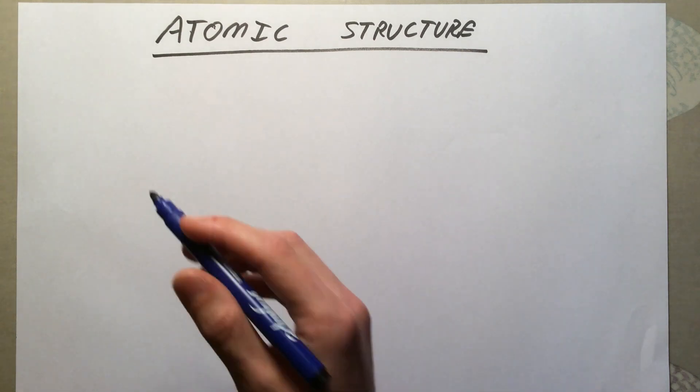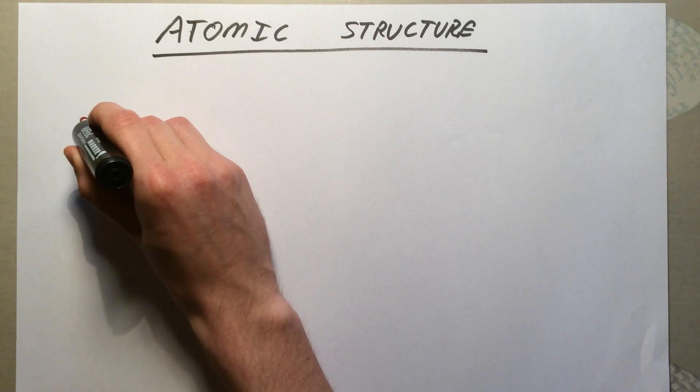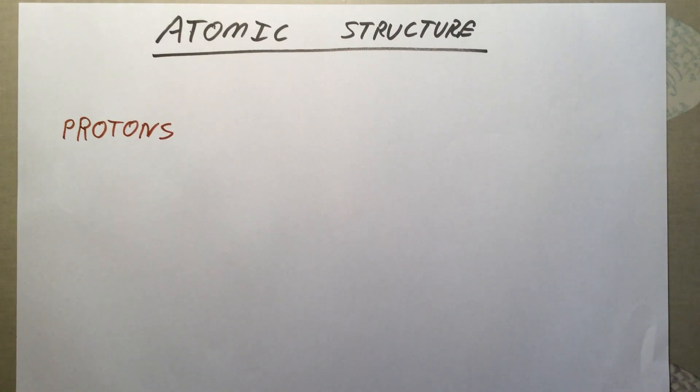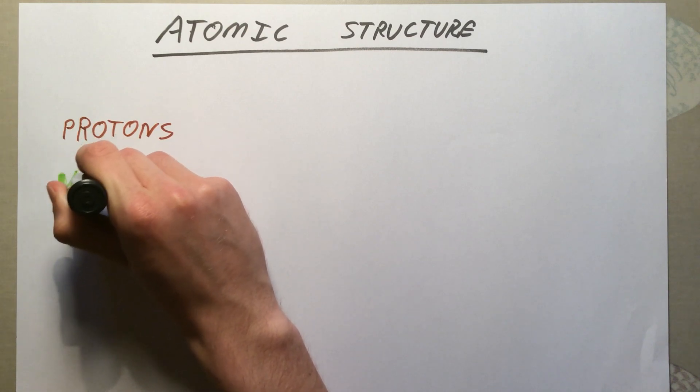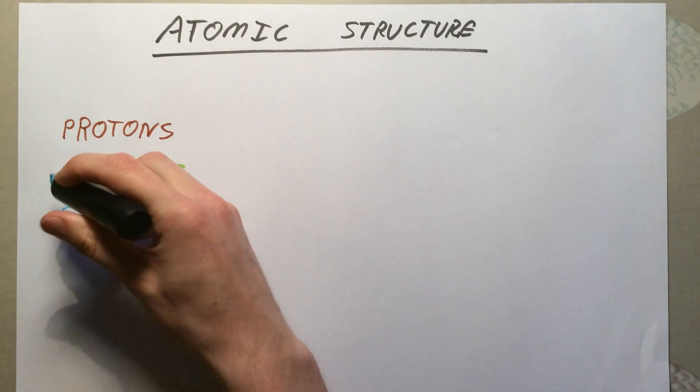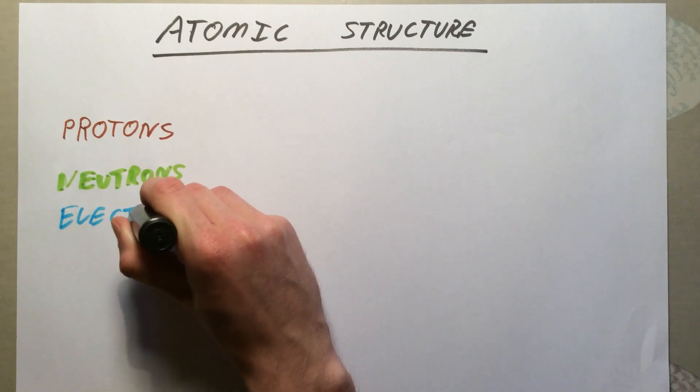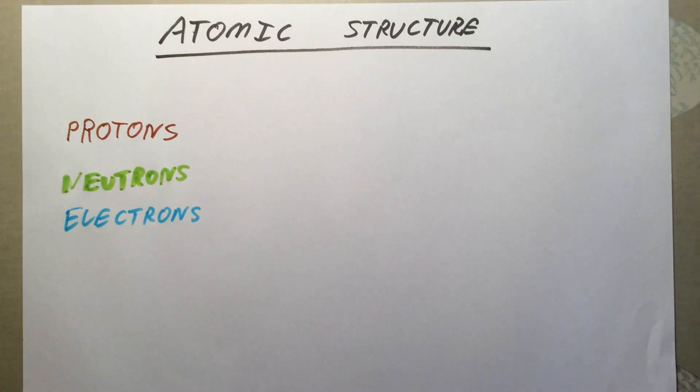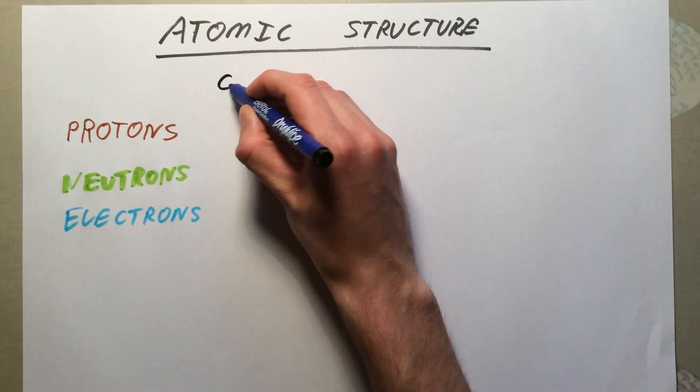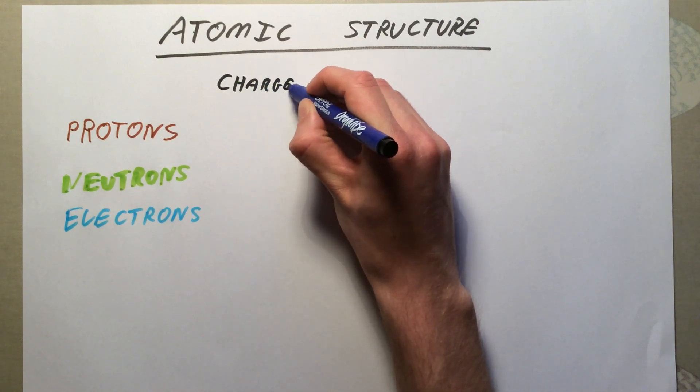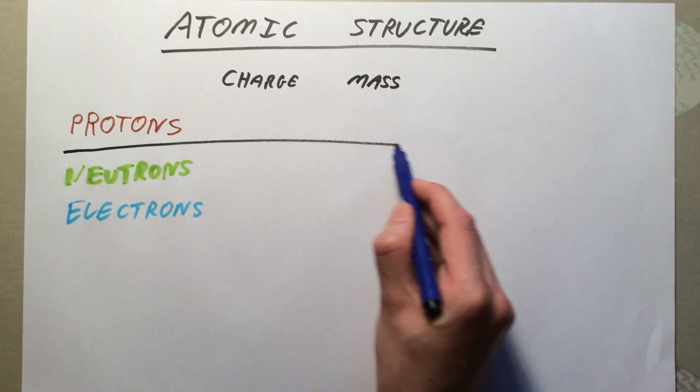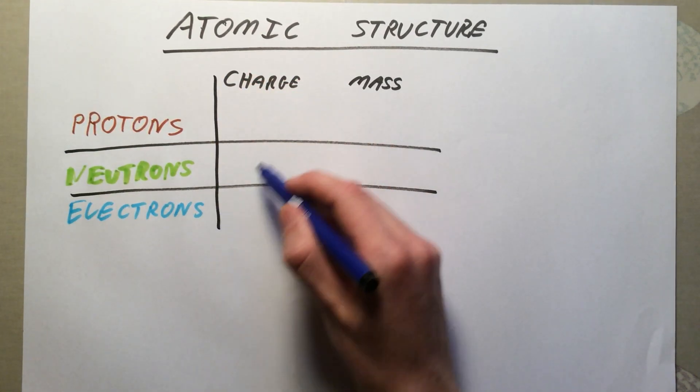The three you need to know about are named the protons, neutrons, and electrons. We are going to be talking about three properties of them: their location, which we'll draw and explain; their charge - are they positive, negative, or neutral; and their mass - how much they contribute to the mass of an atom. As we go through this video, we'll fill in this table, which you are going to go away and learn and never drop a mark on in an exam.